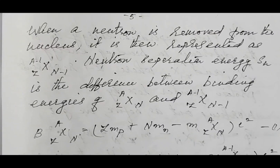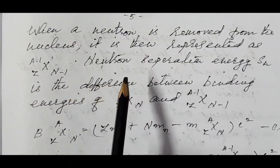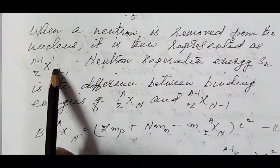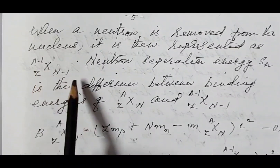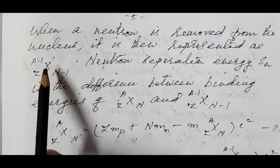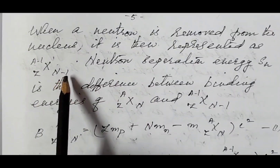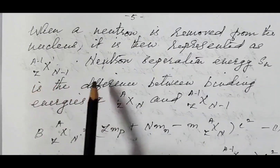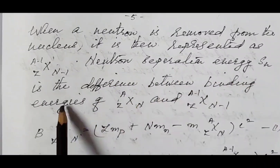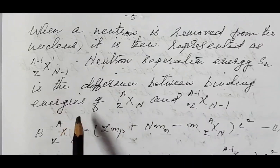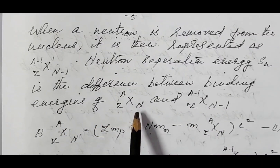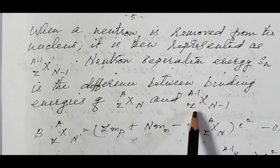Let us derive the expressions for proton and neutron separation energies. When a neutron is removed from the nucleus, it is represented as X(A−1, Z, N−1) — that is, one neutron less from the total number of nucleons means A becomes A−1, while Z remains the same and N becomes N−1.